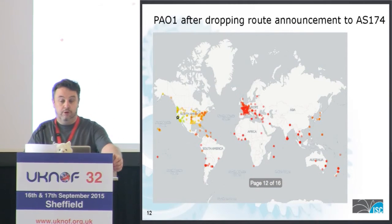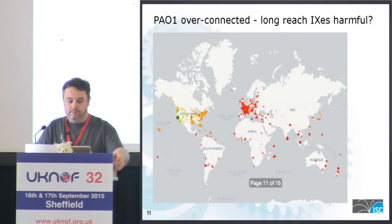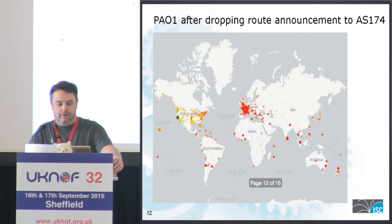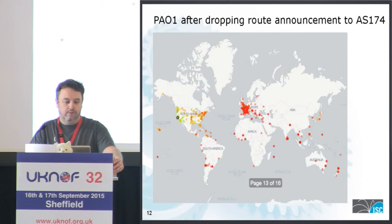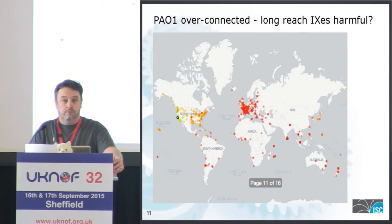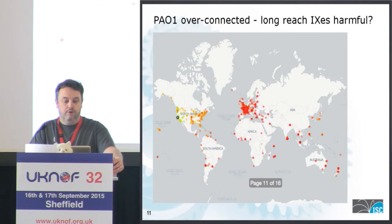We also have a similar situation with Cogent — no point hiding the name, there's evidence to anybody who actually looks at the data. A lot of Cogent's network was routing back to the west coast of the US, so simply dropping the route — and yeah, we've certainly got a marked improvement there.